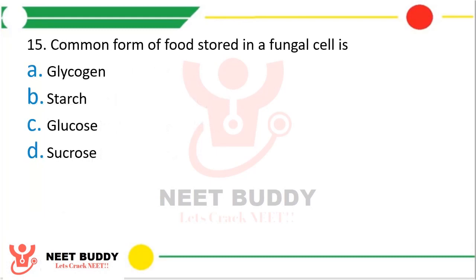Question 25. The common form of food stored in a fungal cell is: Option A, Glycogen; Option B, Starch; Option C, Glucose; or Option D, Sucrose. The correct answer is Option A, Glycogen is the common form of food stored in fungal cells.